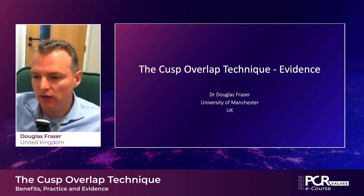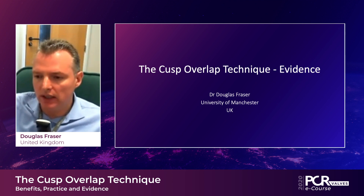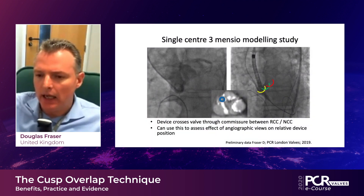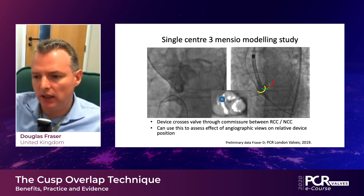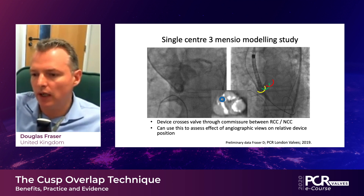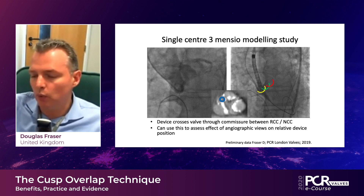Thanks very much, Lars. We've been interested in this for a little while in Manchester, and we've done a few studies ourselves, and there have also been studies presented at TCT very recently. When you come off the annular plane — either LAO or caudal — your device will move up with the right coronary cusp. Because the device comes through between the right and the non, it's sitting close to the right coronary cusp. When you come caudal, the right coronary cusp goes up, and it turns out the device goes up as well. You can measure that using 3-Mensio, or predict how much it would be.